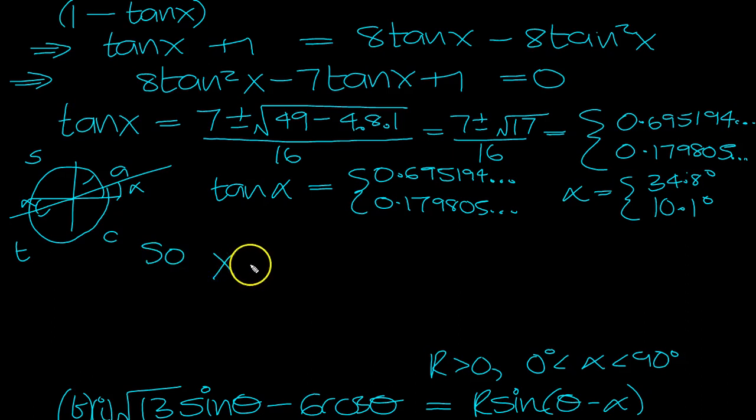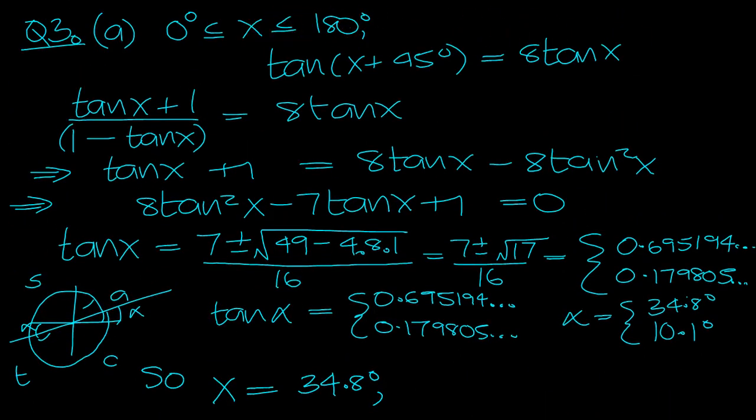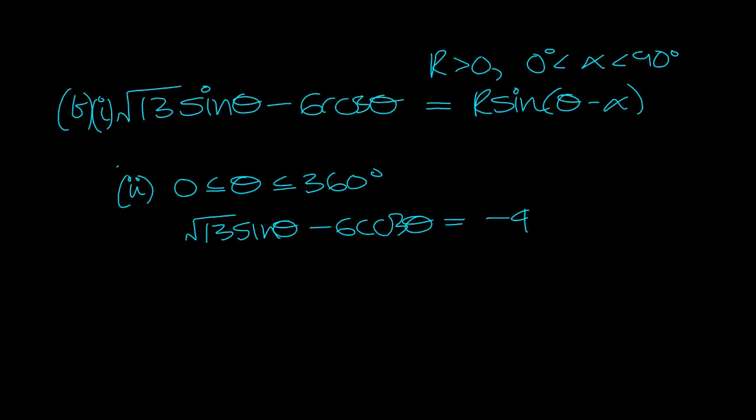So X is equal to then, if we take the 34.8, we've got 34.8, and then round to here, but X is between 0 and 180, so we don't need the next one. And then the other one is 10.1 degrees, and we don't need the other one because outside the range. So that's part A.